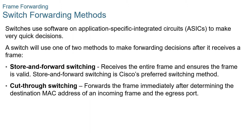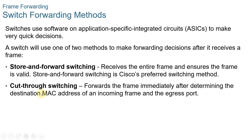Switch forwarding methods. Switches make layer-2 forwarding decisions very quickly because of software on application-specific integrated circuits or ASICs. ASICs reduce the frame handling time within the device and allow the device to manage an increased number of frames without degrading performance. Layer-2 switches use one of two methods to switch frames: store-and-forward switching and cut-through switching.